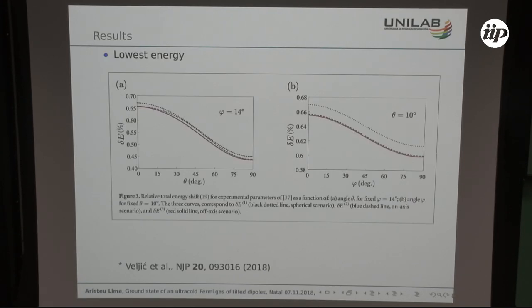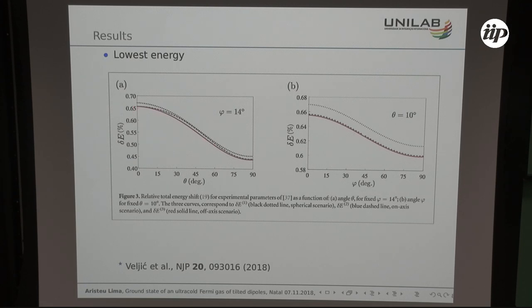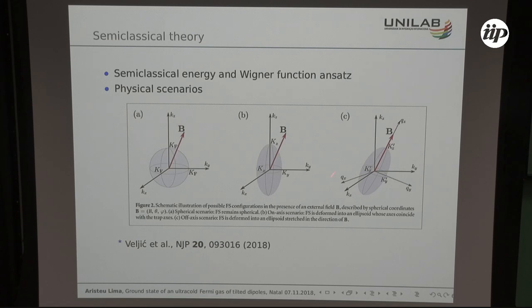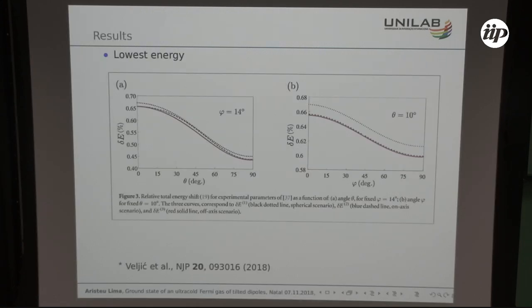We then calculated the energy for these three configurations and what we found out is that the red curve here is the one corresponding to the case in which the ellipsoid rotates along the magnetic field. It is the one with the lowest energy, and we changed different angles - for fixed phi we change theta, for fixed theta we change phi.